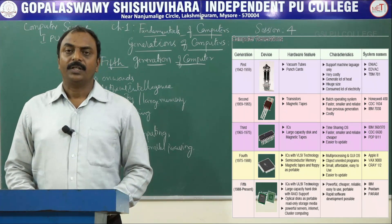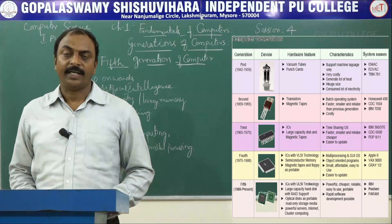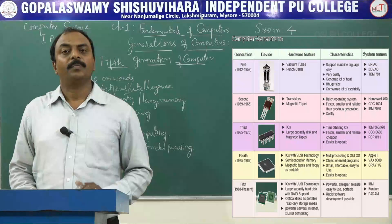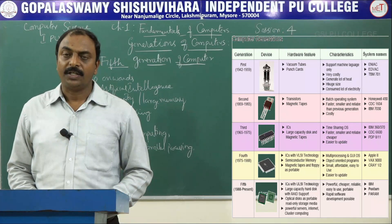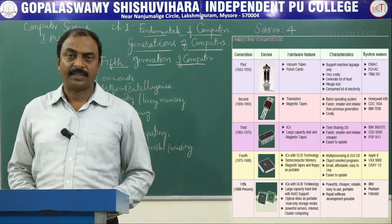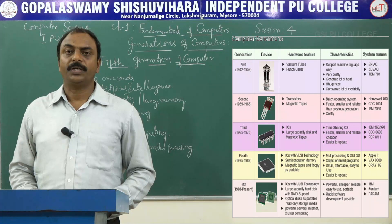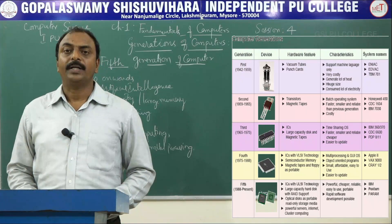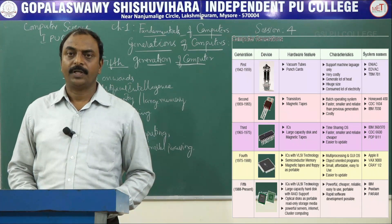Fifth generation computers are based on the concept of AI — artificial intelligence. We are making robotic devices work like human beings using AI. These systems have high capacity, high memory, and very fast processing time, and are used in quantum computing, nanotechnology, and parallel processing. This concludes the topic of generations of computers. Thank you very much.